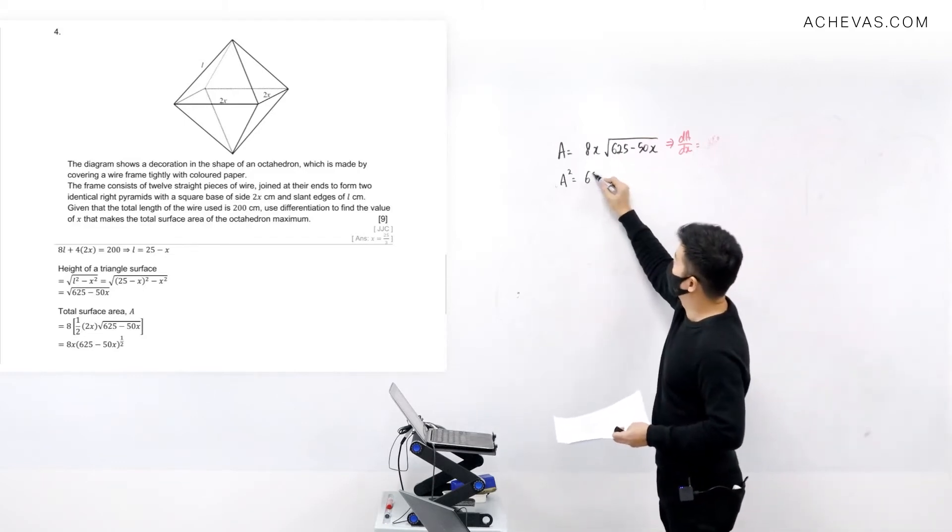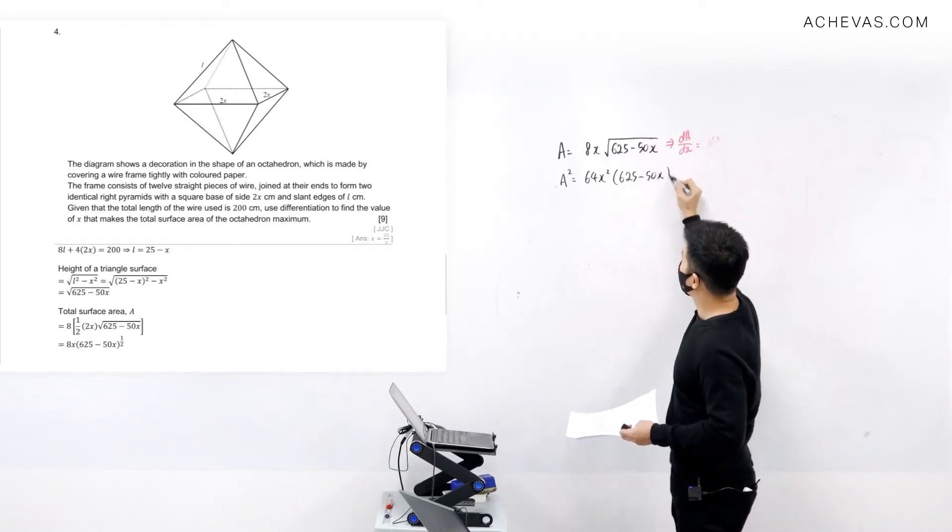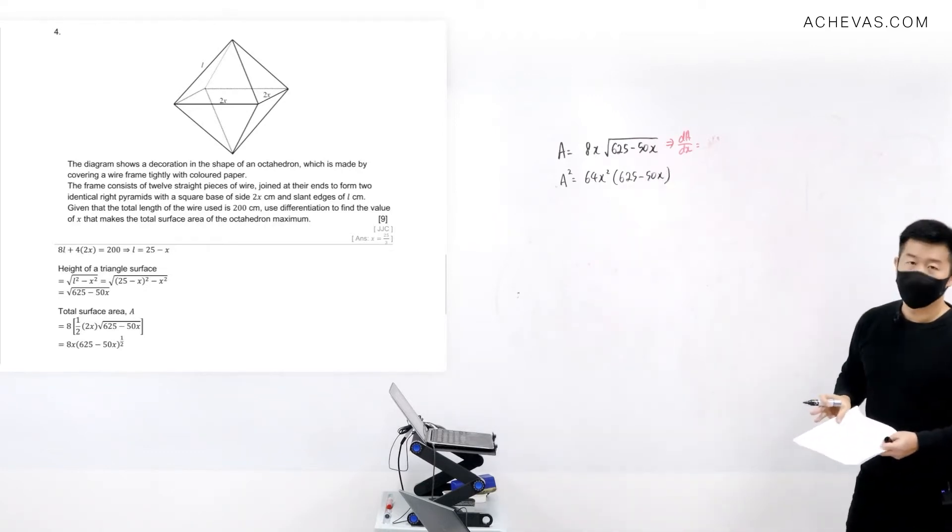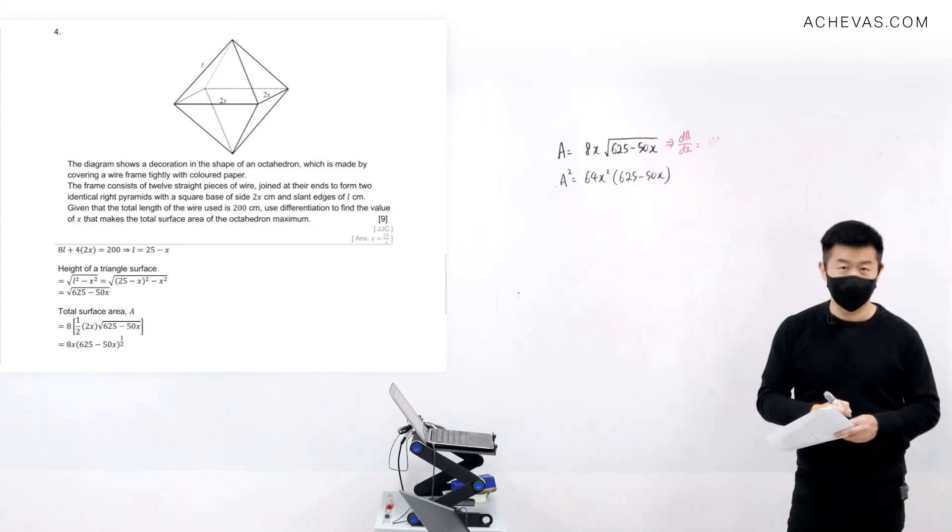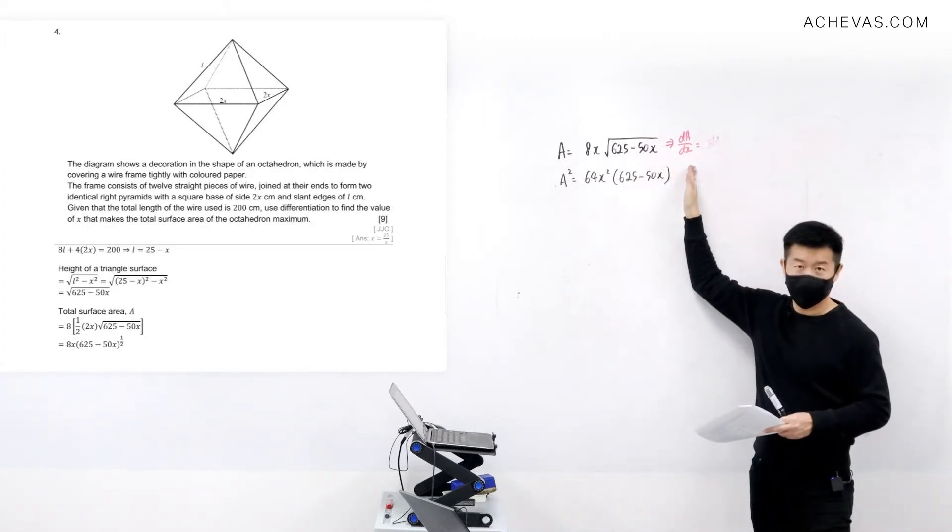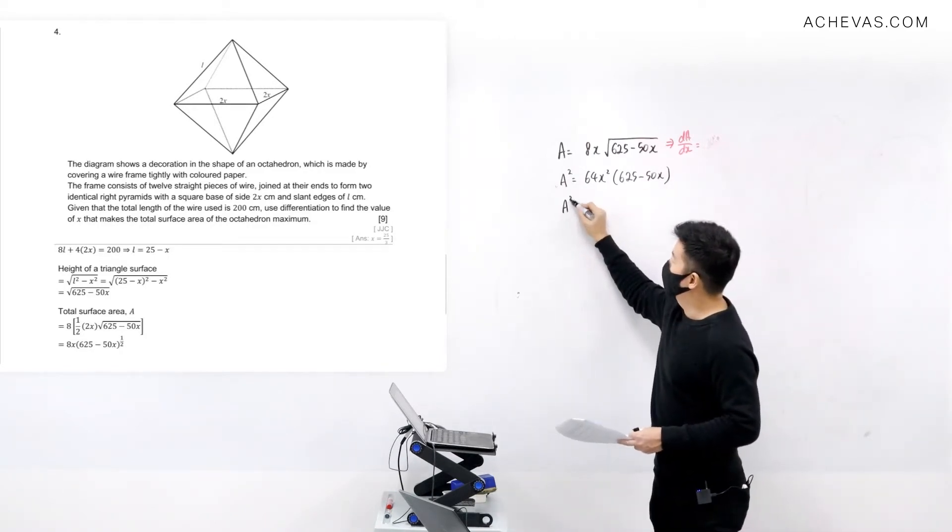I will have A² = 64x² + (625 - 50x). It is definitely easier to differentiate as compared to this. dA/dx, if I were to differentiate it directly, it's easier to differentiate.